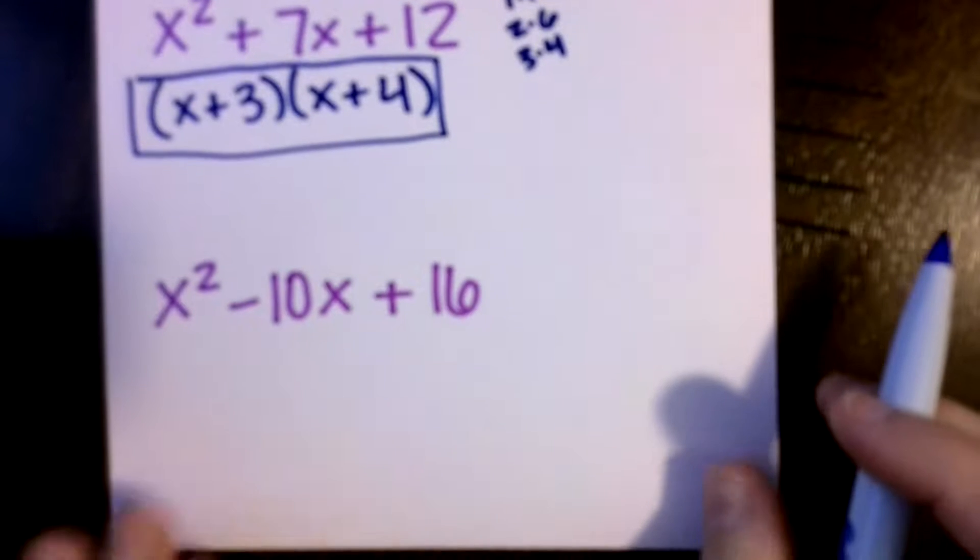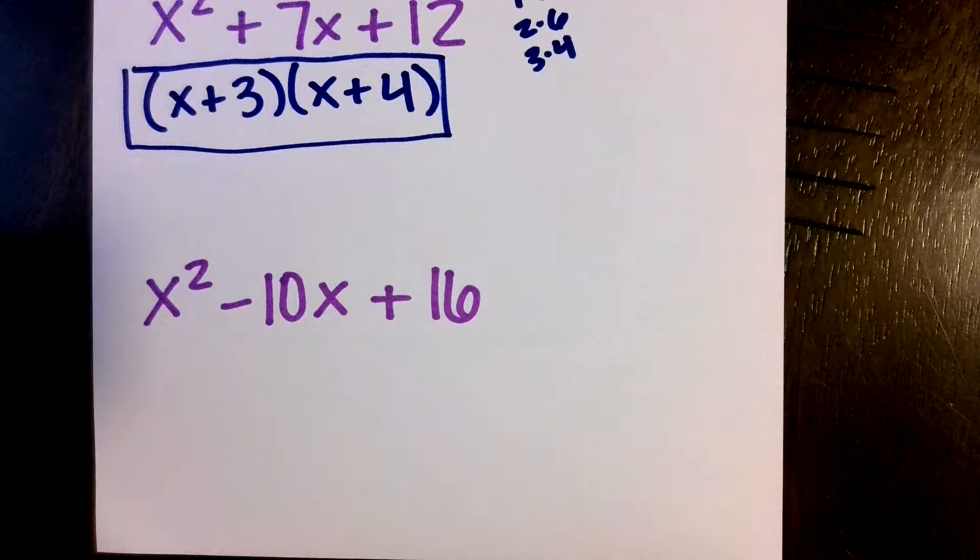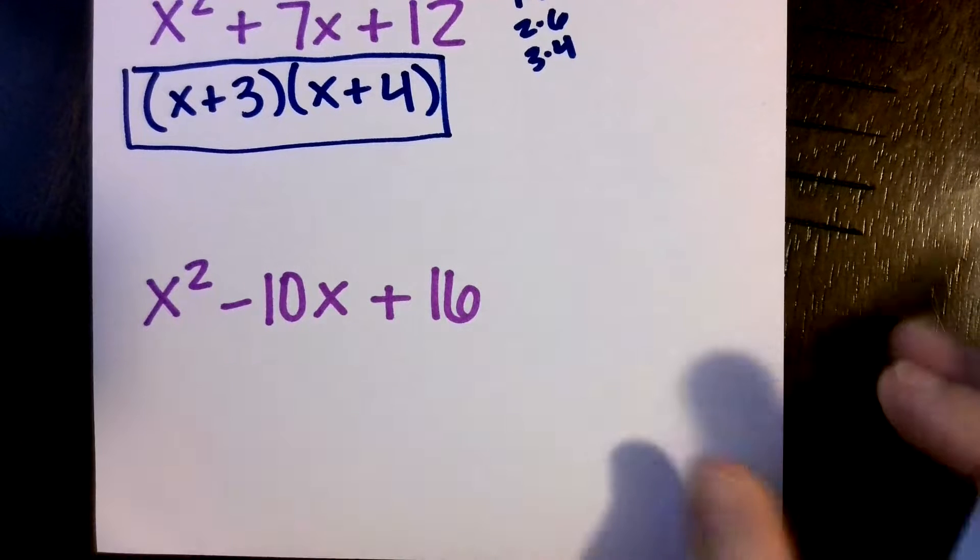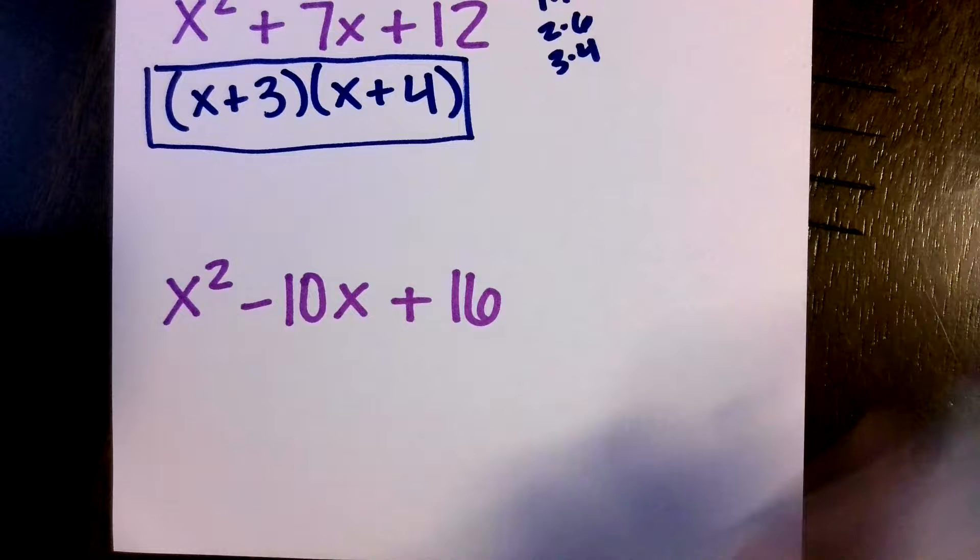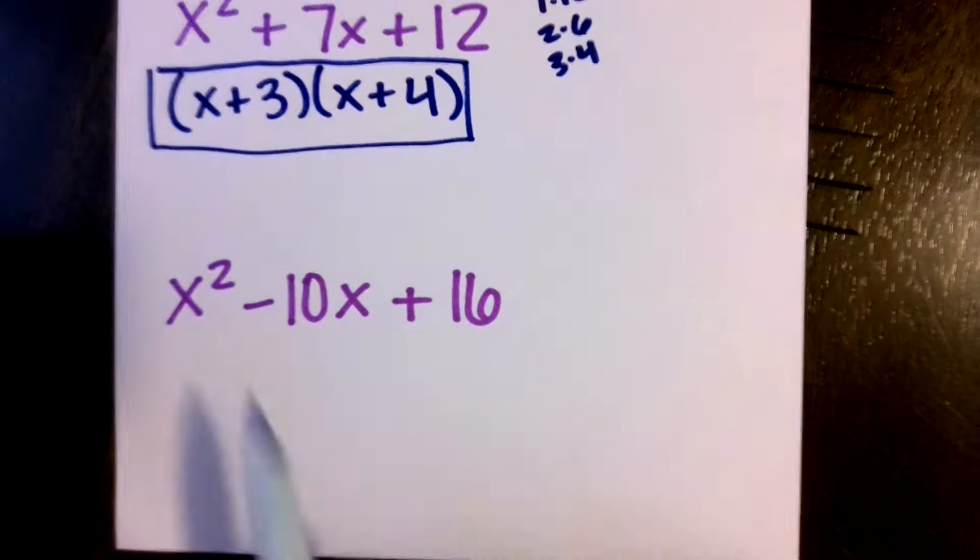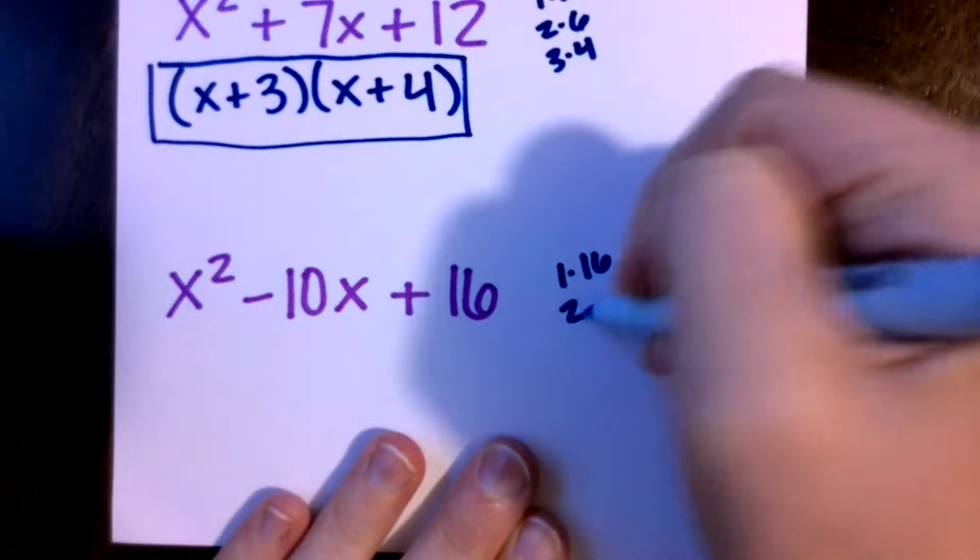Let's try another one. Here we're looking for two factors that multiply to be 16 and add to be negative 10. We do have a difference here where we've got adding to be a negative number, so that means that they both have to be negative because they're multiplying to be positive. Adding to be negative, I could go through the factors.